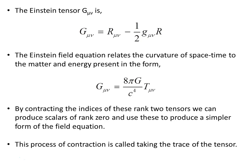The Einstein tensor G_μν is this object here, made up of the Ricci tensor and the Ricci scalar.